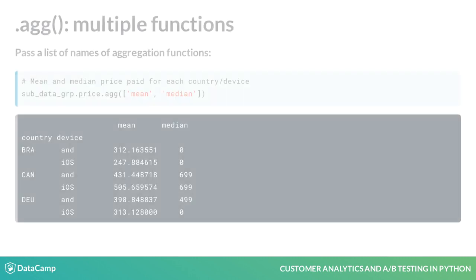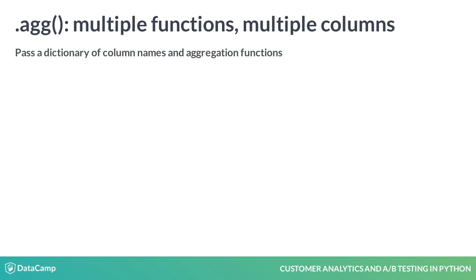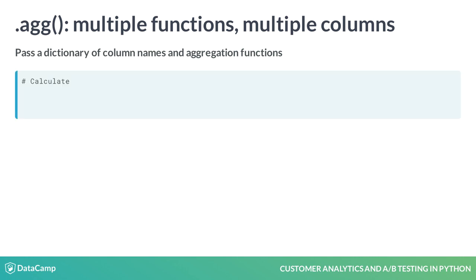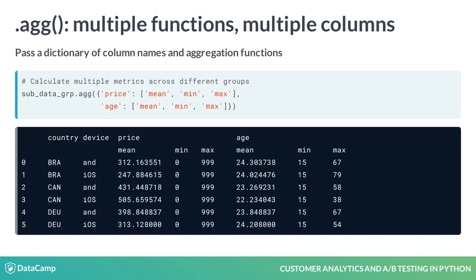It can be further expanded by passing in a list of functions like mean and median and calculating both. Its true flexibility comes from a third type of argument: we can pass Agg a dictionary where the keys are column names within our dataset like purchase or age, and the values are a list of functions to be applied over those columns, still broken out by groups. For example, let's find the mean, minimum, and maximum value of each of our purchase and age columns.